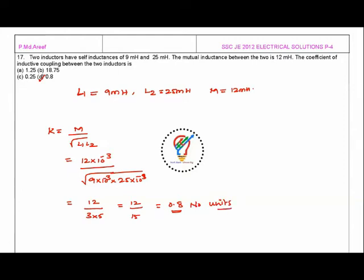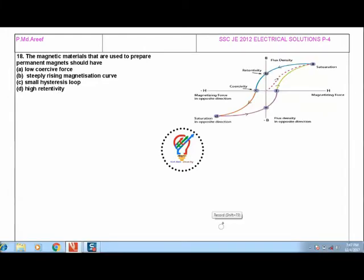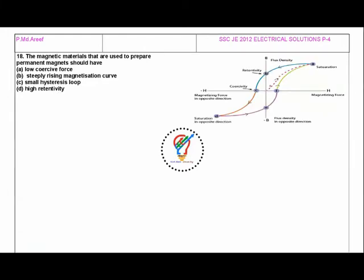The next question is: the magnetic materials that are used to prepare permanent magnets should have low coercive force, steeply rising magnetization curve, small hysteresis loop, or high retentivity. So as you can see here, this is the B-H curve. In x-axis we have taken H and y-axis we have taken B.